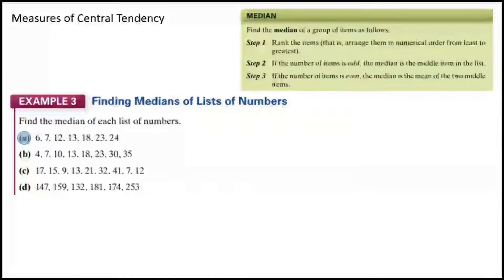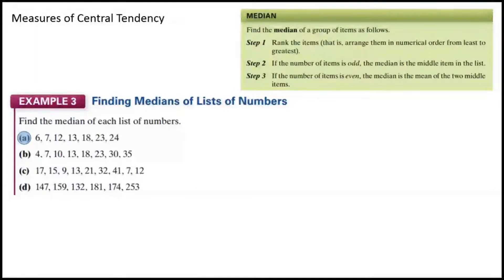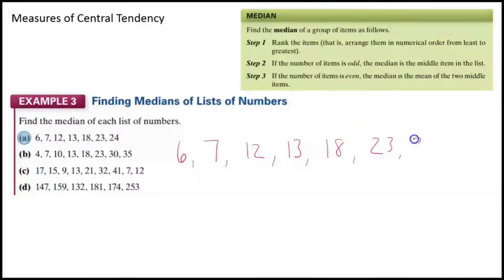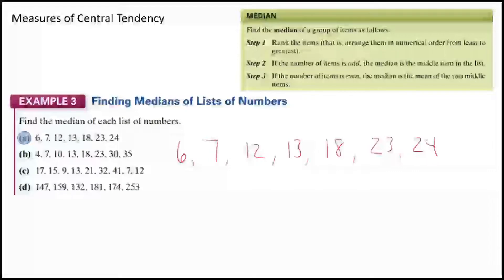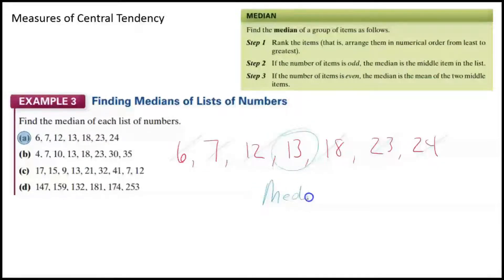Find the median of each list of numbers. For example A: 6, 7, 12, 13, 18, 23, 24 — they're already in order. We have 1, 2, 3, 4, 5, 6, 7 items — an odd number. You can cross off each end: 6 goes with 24, 7 goes with 23, 12 goes with 18, and 13 is left right in the middle. That is your median.